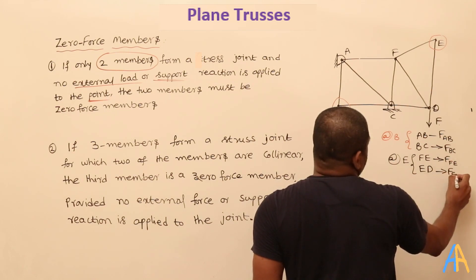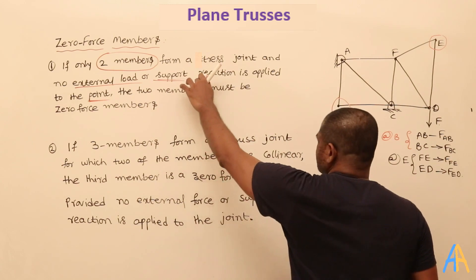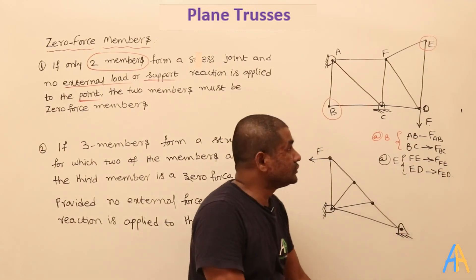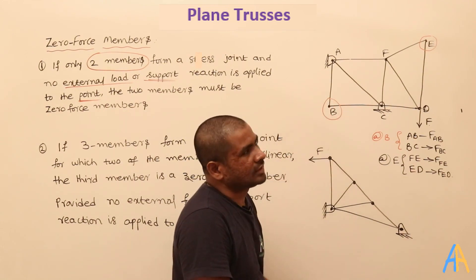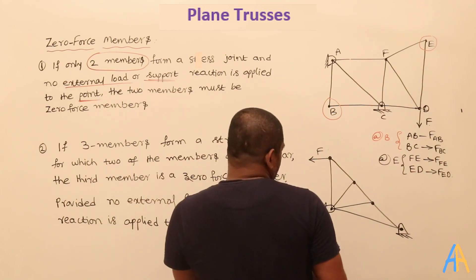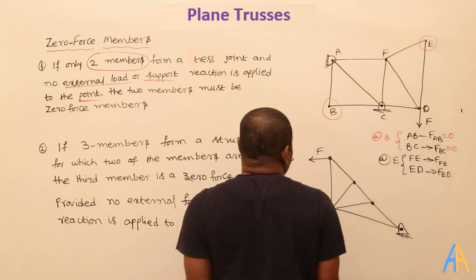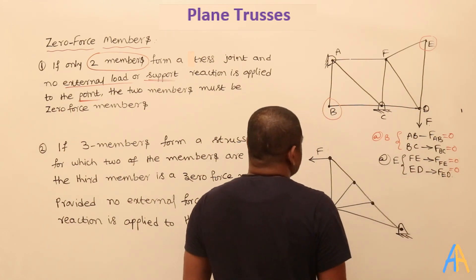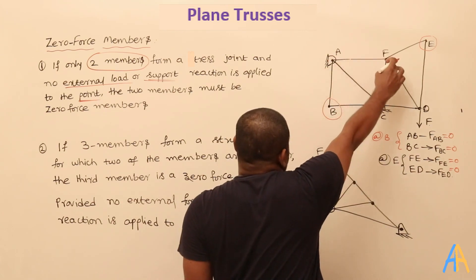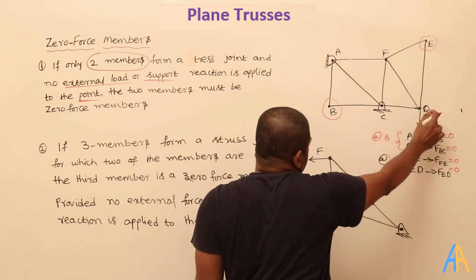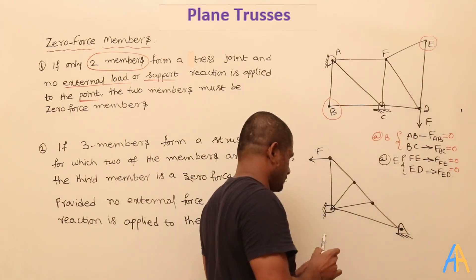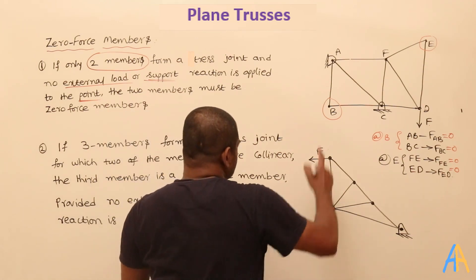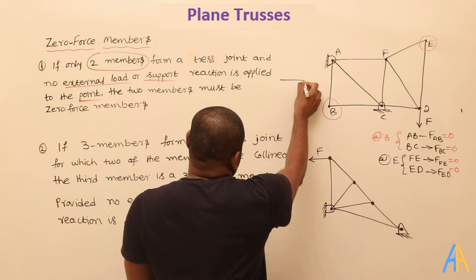We need to check whether the first condition is satisfied. At joint B, only two members are joining and there is no external force or reaction force at B. So we can assume F_AB and F_BC are both zero. Similarly at joint E, the first condition is satisfied, so those forces are zero too. At other joints like F and D, there are three members, so the condition does not apply.